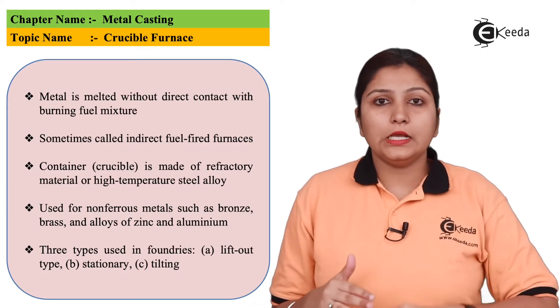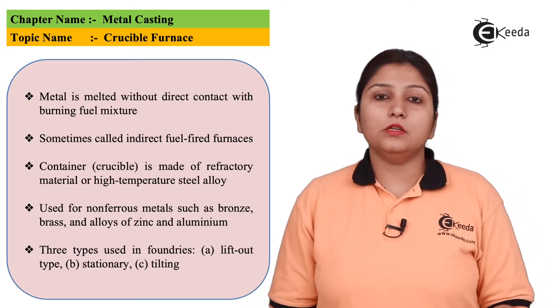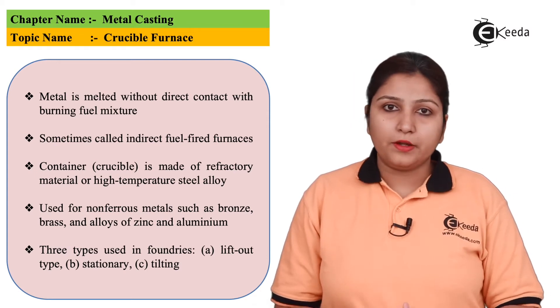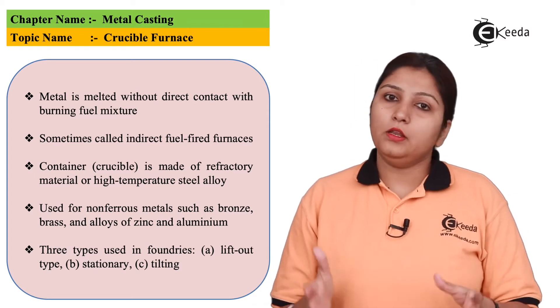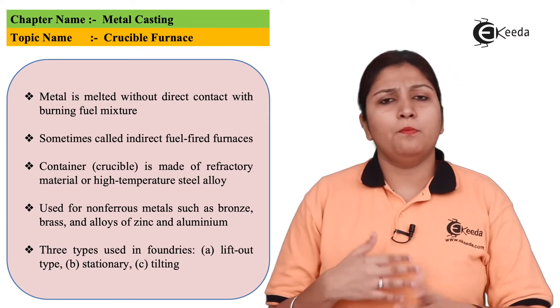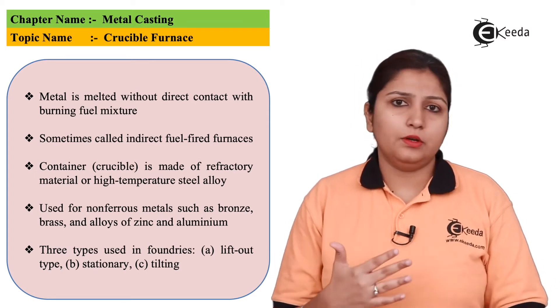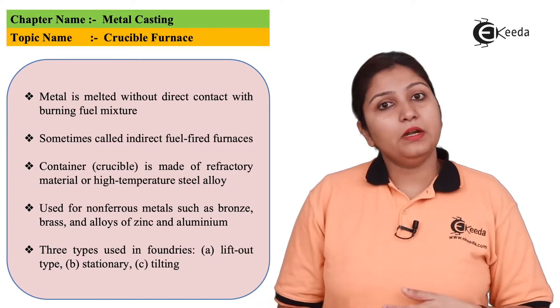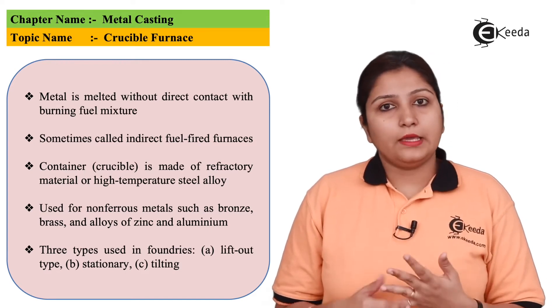Crucible furnace, unlike other furnaces, is again used for melting of the metal. The metal is poured in solid form or in semi-solid form. It is melted but via a different means.